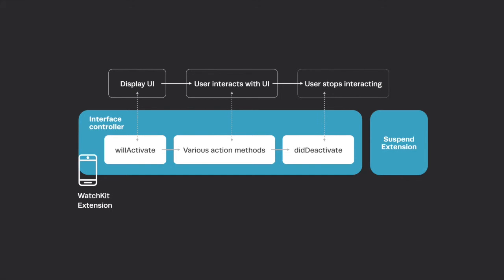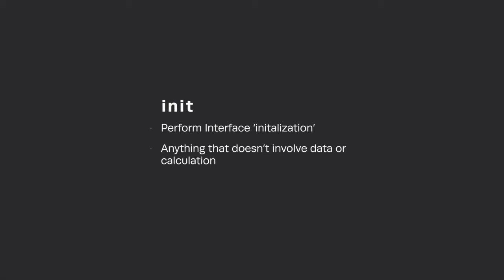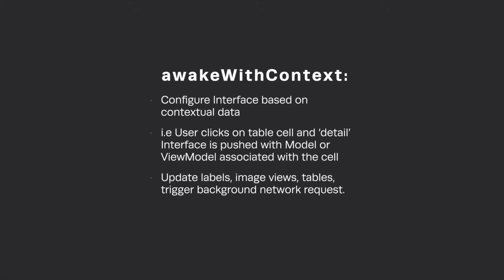As a user interacting with watch apps — whether a glance, the app itself, or any other view — I don't expect to be waiting. It's a watch; I want the information instantly. Let's step through that lifecycle in more detail. When an interface controller gets initialized we set up initial values, but we don't really need to be performing any network requests. For an interface controller to be pushed onto the screen something had to have asked it to, so `awakeWithContext` gets called and the table row might provide a dictionary with contextual data like a view model, and at this point we should be setting initial values for labels, images, and tables.